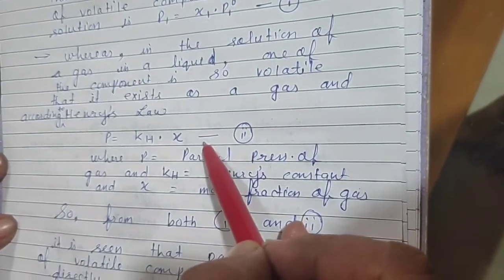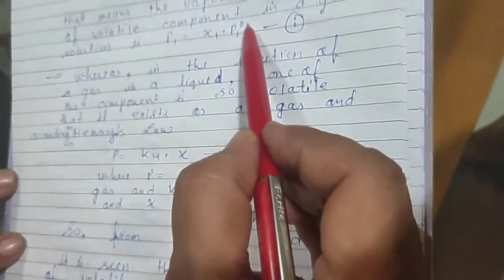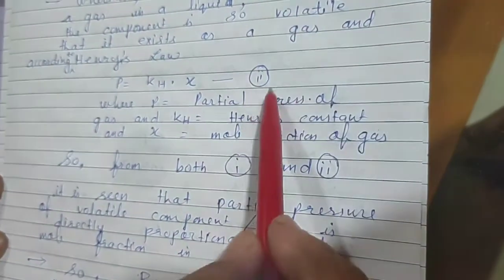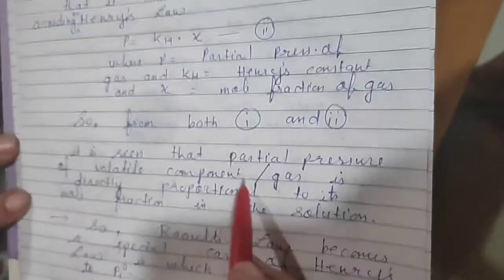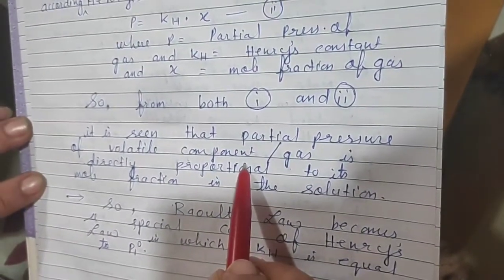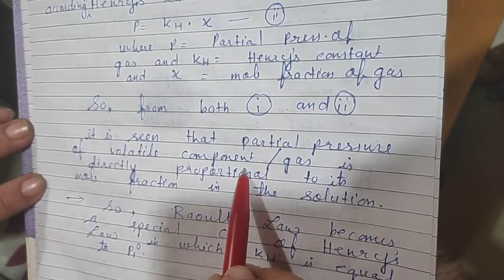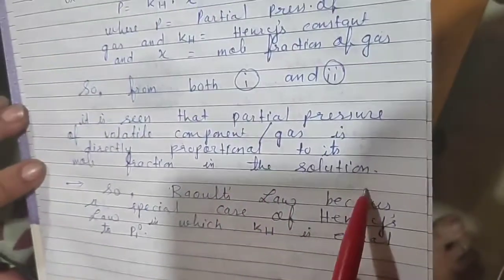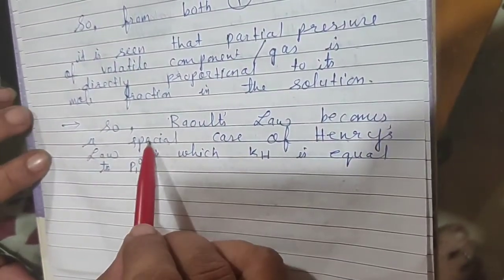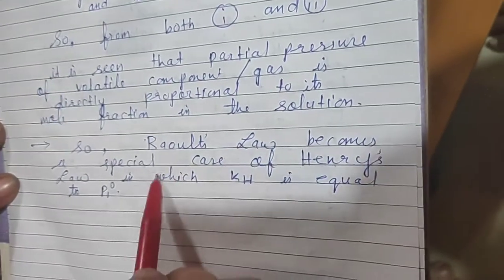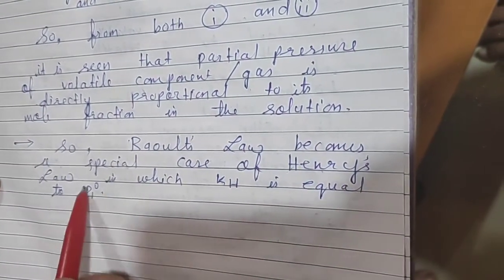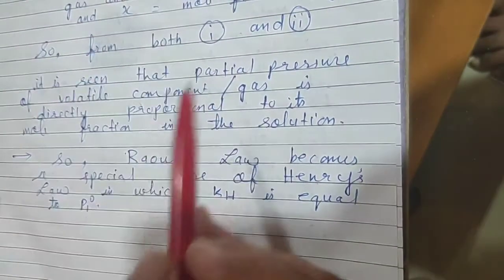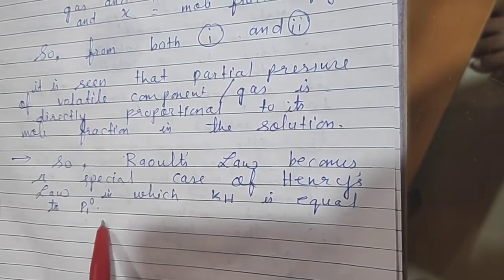In Raoult's law the constant is P1°, and in Henry's law the constant is KH. From both equations, it is seen that partial pressure of a volatile component (gas) is directly proportional to its mole fraction in the solution. Therefore, Raoult's law becomes a special case of Henry's law in which KH is equal to P1°.